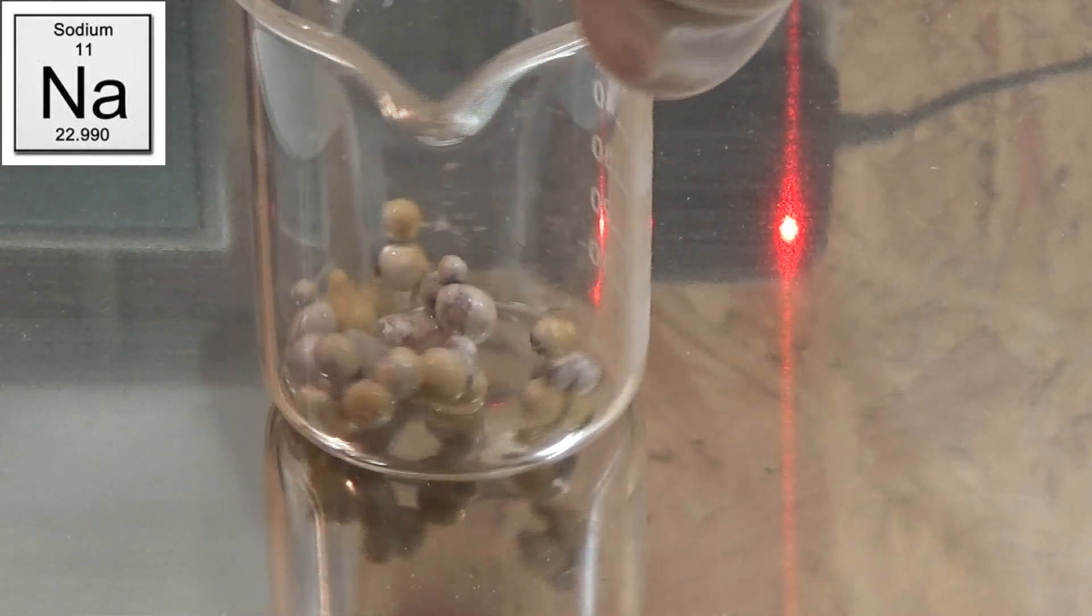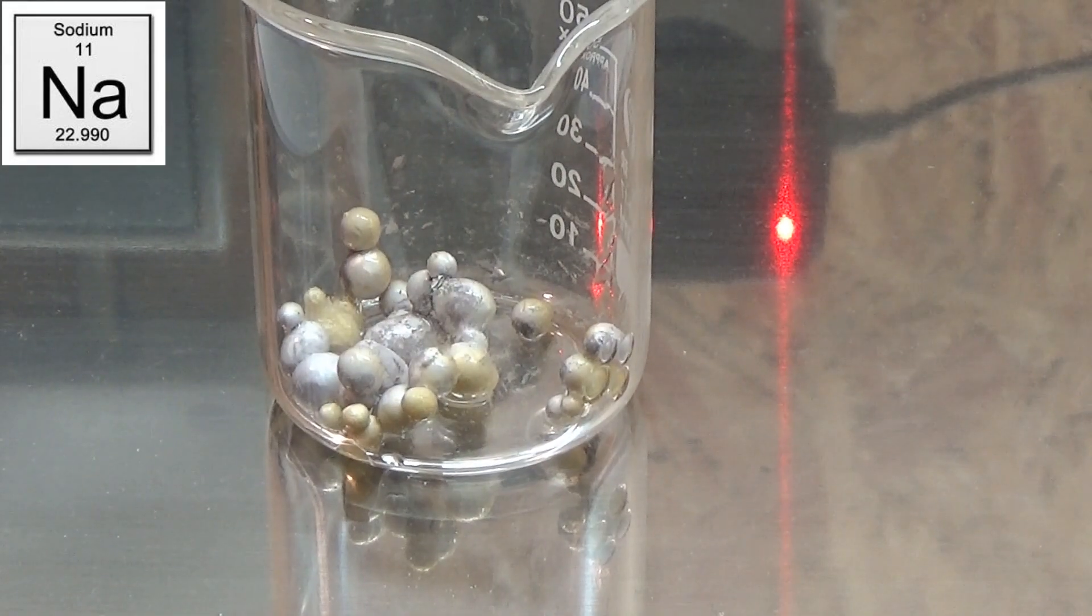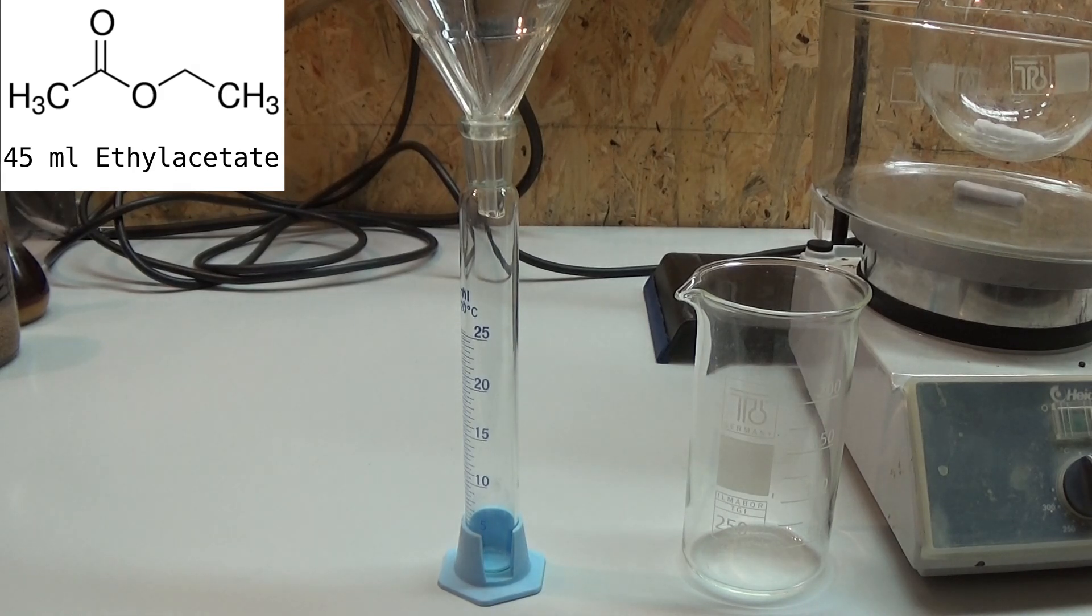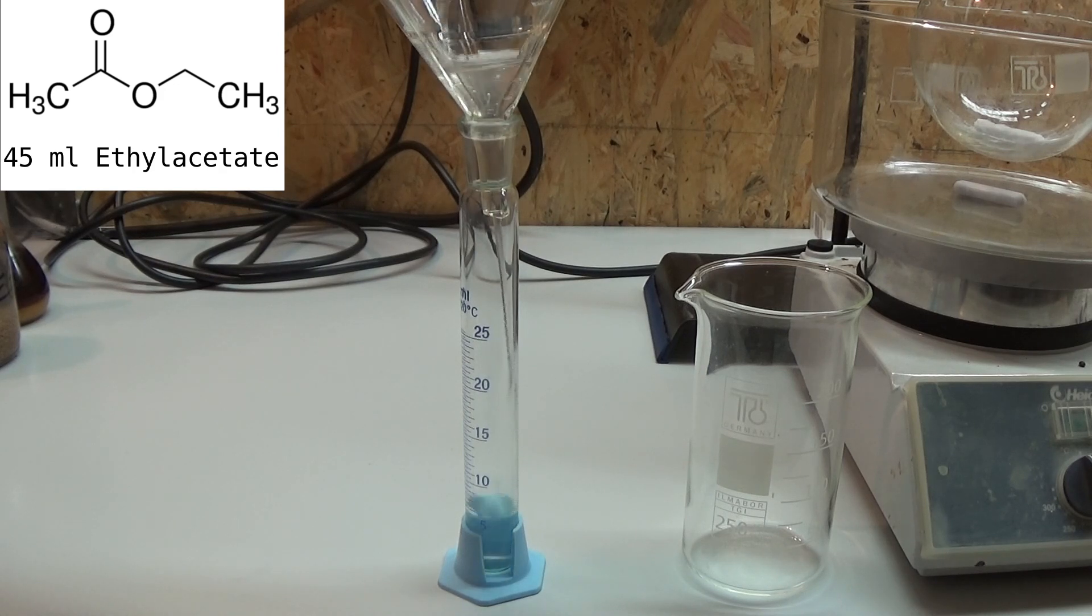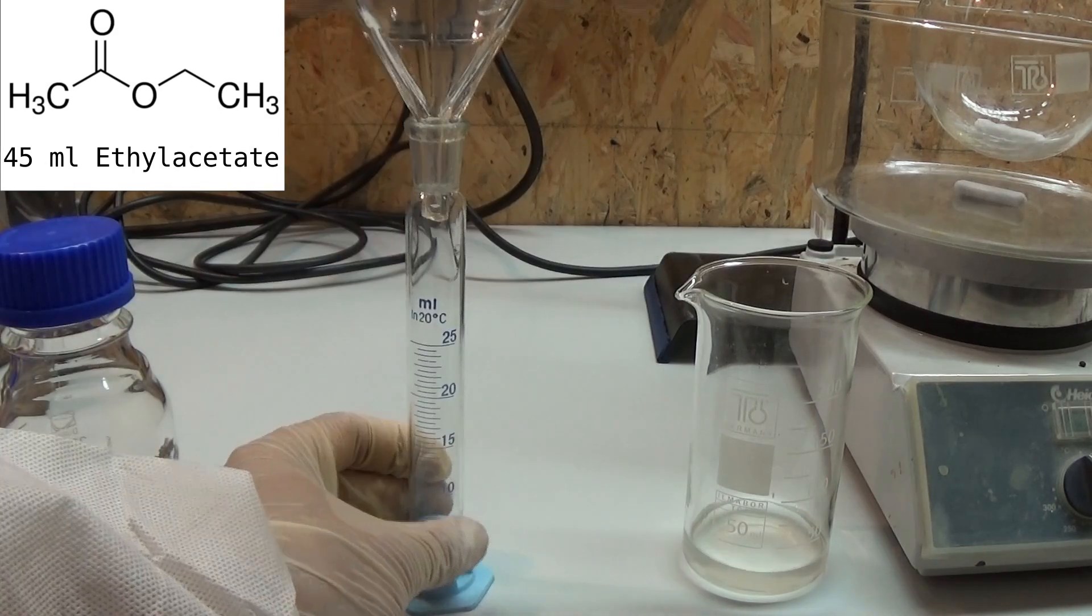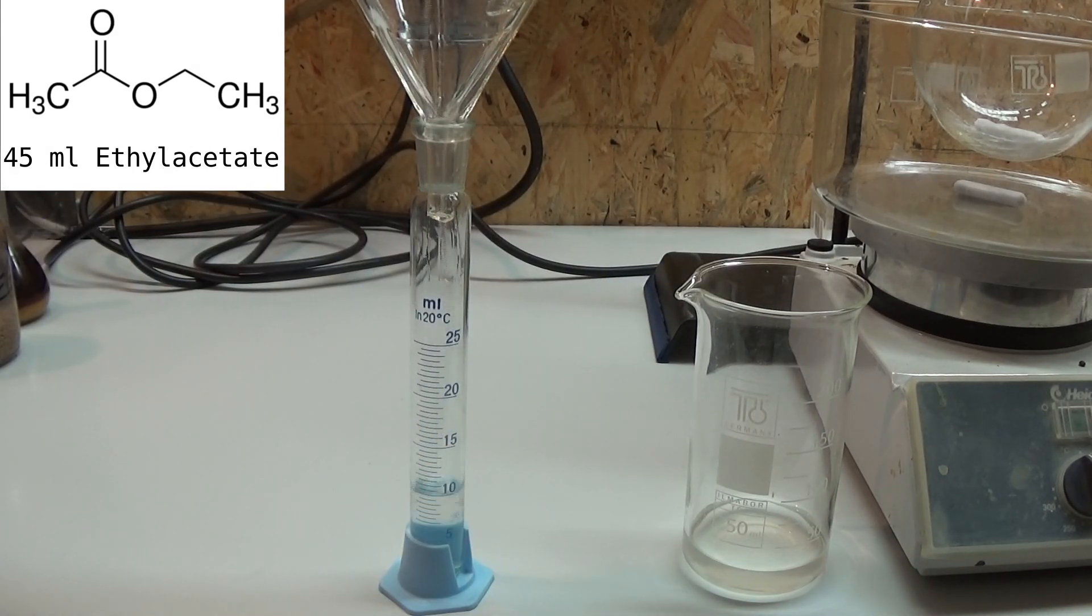Next up we measure out 45 milliliters of absolutely dry ethyl acetate. It is important that the ethyl acetate is 100% dry because of the sodium we are using. If there is any water left in our reactants it will react with the sodium forming sodium hydroxide which could potentially start side reactions and decrease the yield.